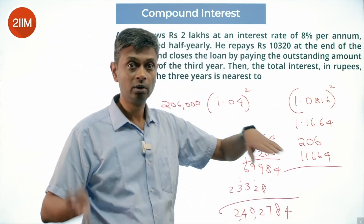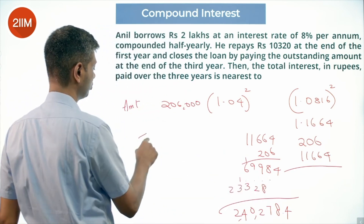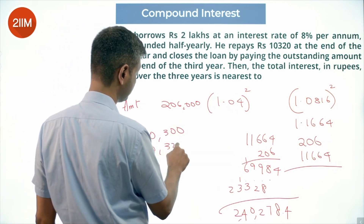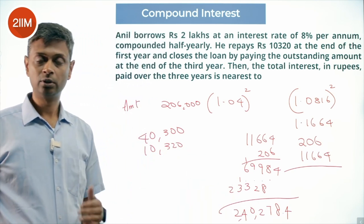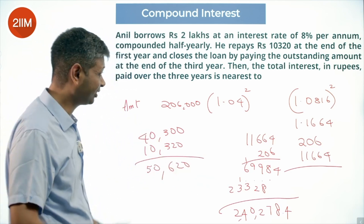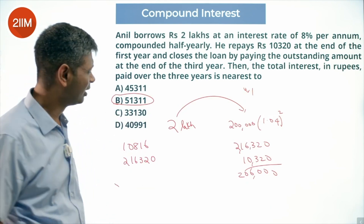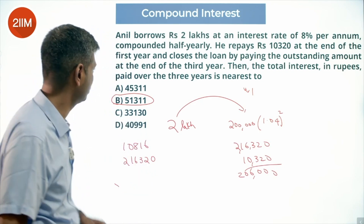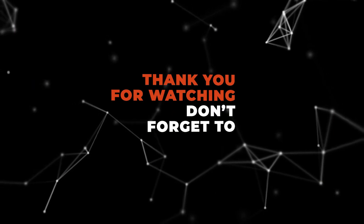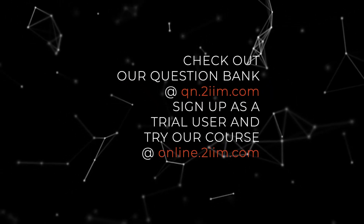A little more than that because I've let go of the 0.0016 squared part. So what he repays at the end means he's repaying about 40,278 — I'll approximate as 40,300, which should be a little more due to what I've let go. Already repaid 10,320. I'm calculating the amount more than 2 lakhs — 2 lakhs is the principal. So 40,300 plus 10,320 gives approximately 50,620 total interest paid. I'm looking at the choices, and you can punch the exact numbers into a calculator.